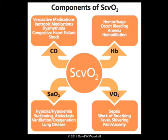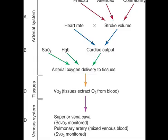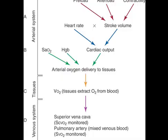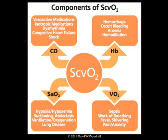What things affect cardiac output and thus SCVO2? Vasoactive medications, inotropic medications, dysrhythmias, congestive heart failure, and shock all affect cardiac output. If cardiac output goes down, SVO2 is going to change too — cardiac output is at the top of our diagram before oxygen gets extracted by the tissues. Hemoglobin will also affect SCVO2. Hemorrhage, bleeding, anemia, and hemodilution all affect hemoglobin level and thus the patient's SCVO2.